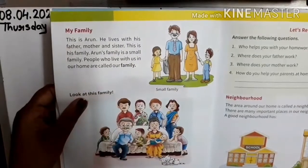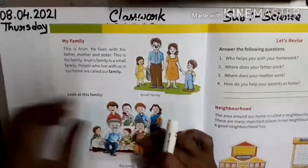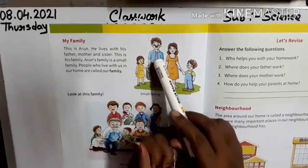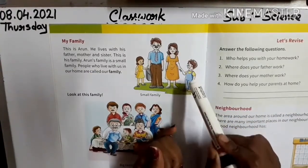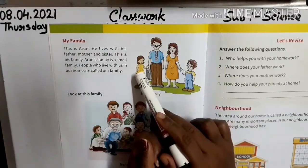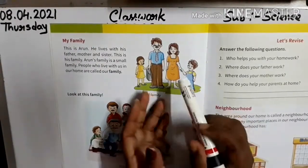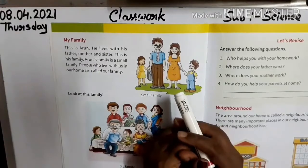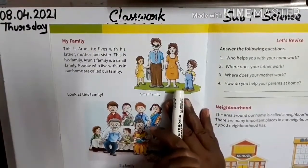Now, my family. This is Arun. He lives with his father, mother, and sister. This is his family. Arun's family is a small family. People who live with us in our home are called our family.